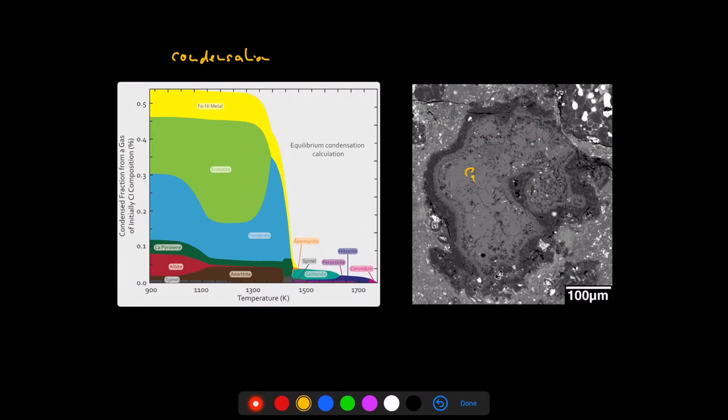The CAIs of course contain calcium-aluminum rich minerals. And the CAIs often have one further additional distinctive characteristic, and this is this kind of zonation here towards the rim. There are different zones.